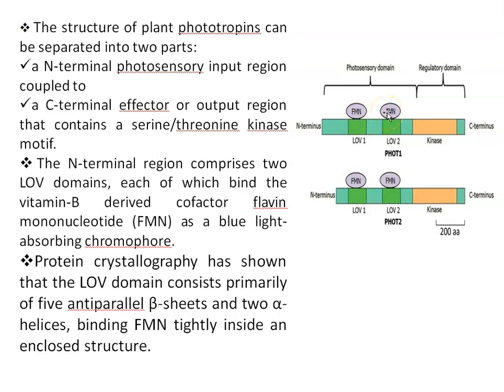FMN are blue light absorbing chromophores. Protein crystallography has shown that the LOV domain consists primarily of five anti-parallel beta sheets and two alpha helices, binding FMN tightly inside an enclosed structure. So this is the structure of phot-1 and this is the structure of phot-2.